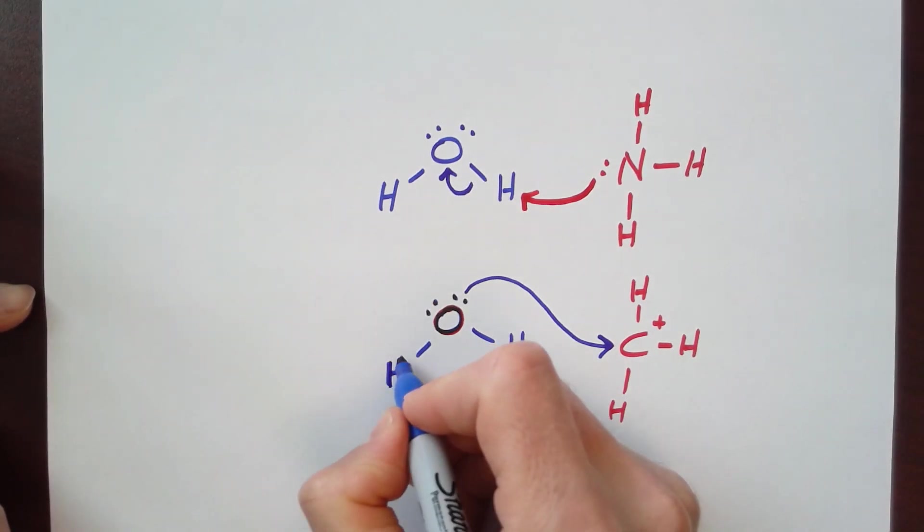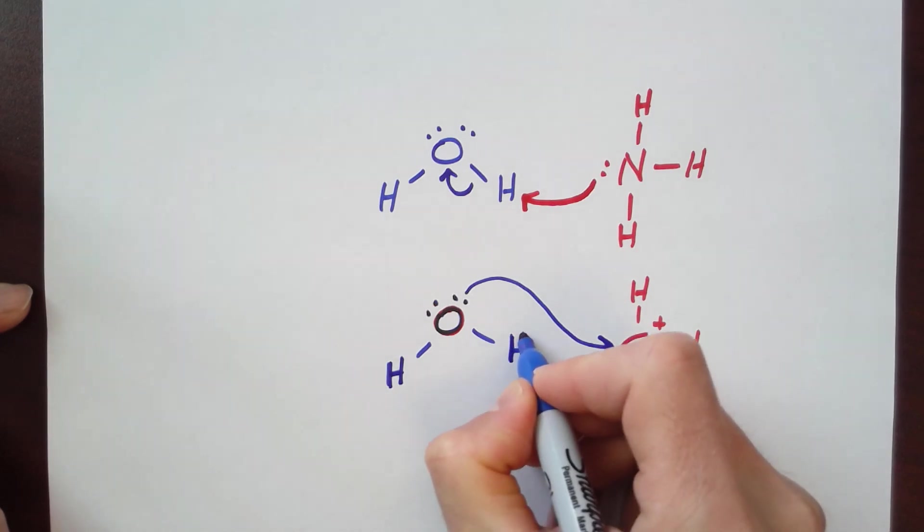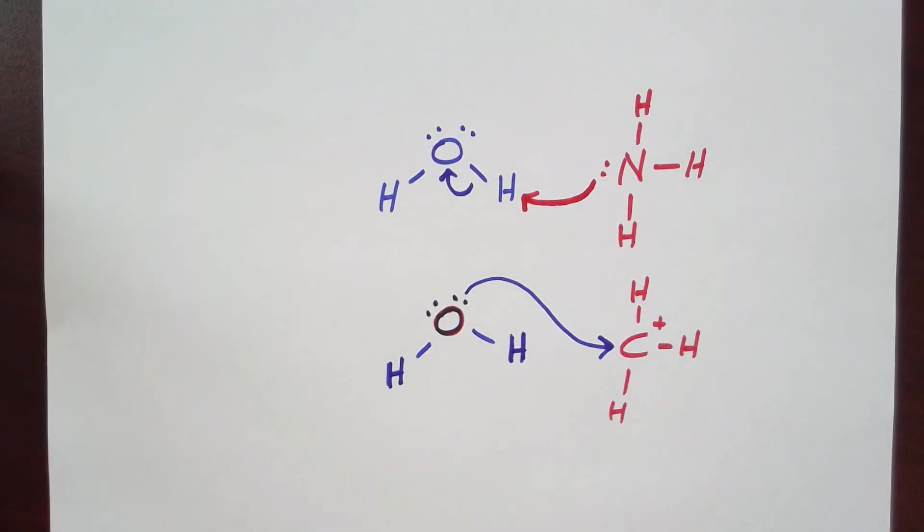And so while we can classify some molecules or intermediates as nucleophiles and electrophiles, a lot of neutral compounds have electrophilic and nucleophilic parts to them.